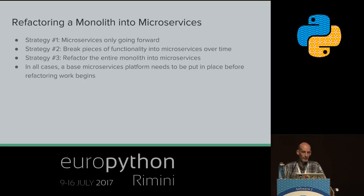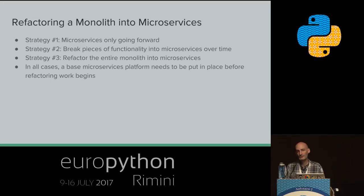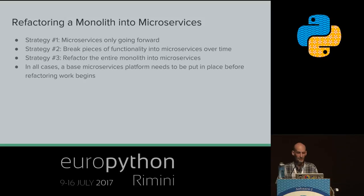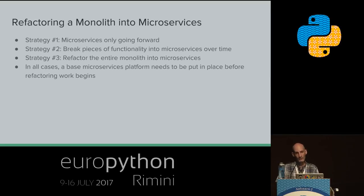You may wonder how to go about transforming a monolithic application into microservices — unfortunately, that's pretty hard. There are three main strategies. The easiest is to say: what I have so far I'll keep, but anything new I build from now on I'll build as microservices. That's the easiest strategy, though not the greatest, because you still have a monolith you need to grandfather into your microservices platform.